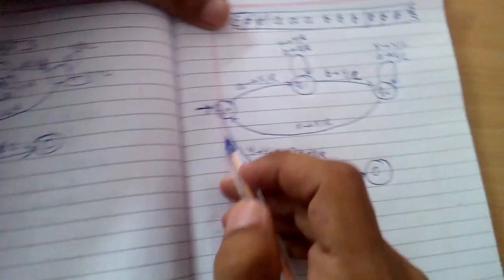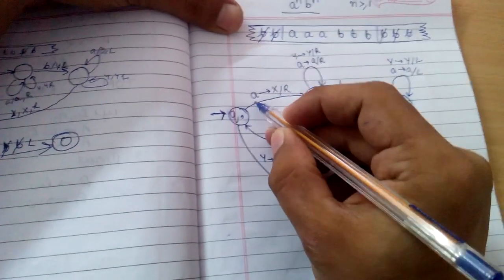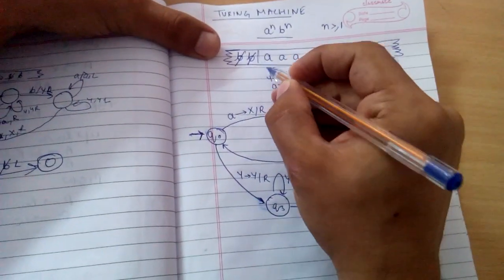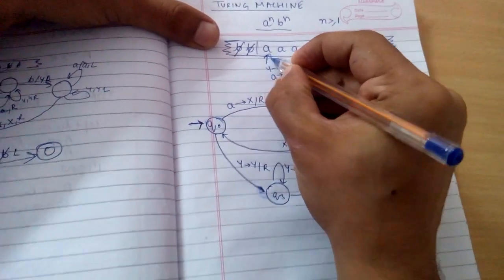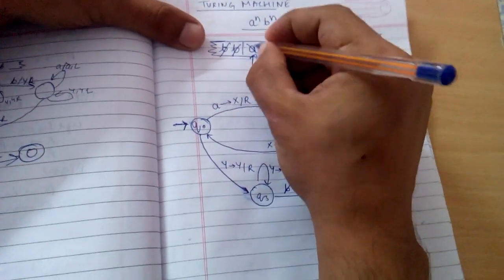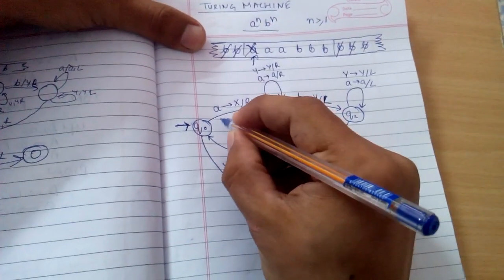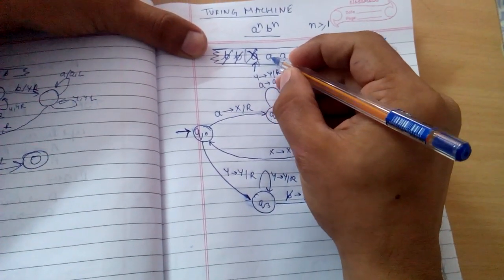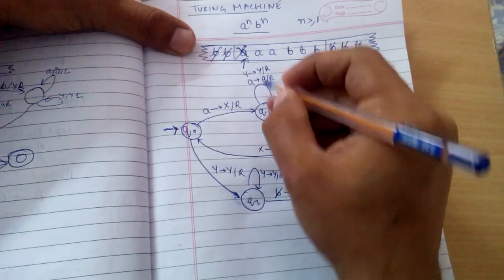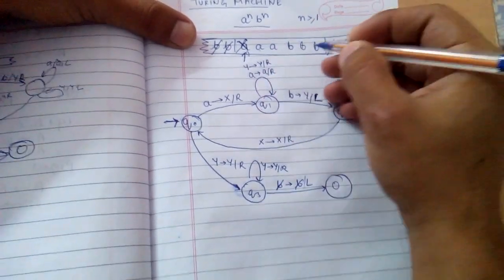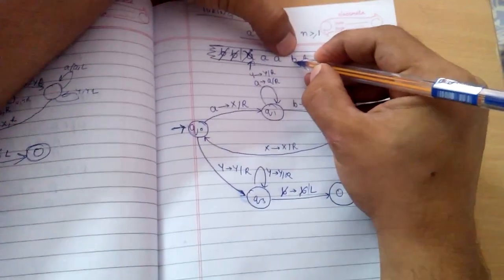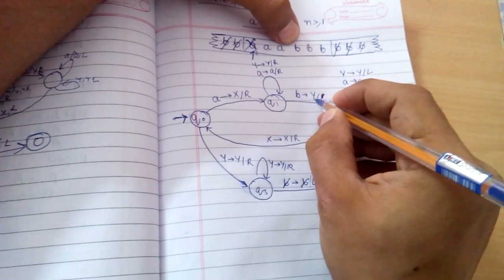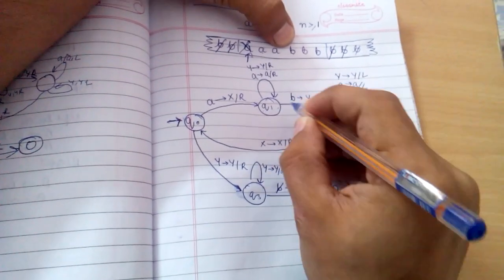Our starting state is q1. First we see 'a' - the pointer is here - then we replace it by 'x' and move to the right. We see there is an 'a', so we move to the last, and when we encounter the first 'b' we replace it by 'y'. Then our pointer moves to the left.